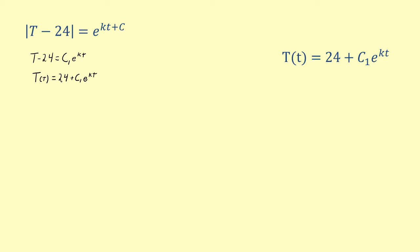Next, we solve for c sub 1. Plugging in zero for lowercase t gives us capital T of zero equals 24 plus c sub 1 times e to the zero power. We know that capital T of zero is also equal to 78, since that is the temperature of the house.